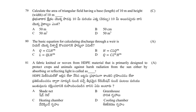Calculate the area of a triangular field having a base length of 10 meters and height of 10 meters. Options: 50 meters, 50 centimeters, 50 meters square, 50 meters cube. The answer is C — 50 meters square. Area of triangle = ½ × base × height = ½ × 10 × 10 = 50 m².